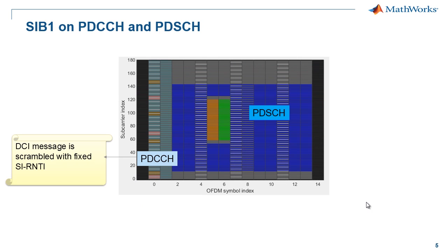Although SIB1 is transmitted in a fixed time schedule, the resource allocation of the PDSCH carrying SIB1 is dynamic and is indicated in an associated downlink control information, or DCI, message. The DCI message associated with system information is always scrambled with SI-RNTI, a fixed radio network temporary identifier which characterizes system information. This means all UEs within the cell coverage can look for this piece of information even before being associated with an eNodeB.